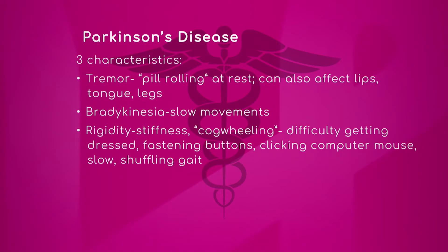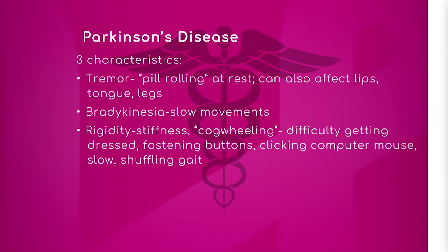The other characteristic is rigidity and stiffness. What is cogwheel rigidity? If you take a patient who has Parkinson's and you try to move their arm, it's not a very smooth motion — what you see is a staccato-like movement of their arm or muscles.